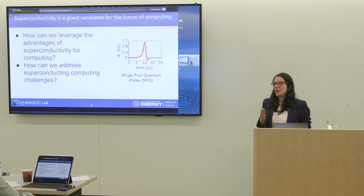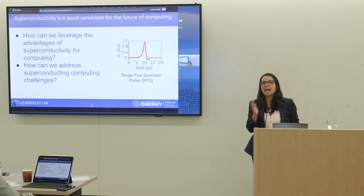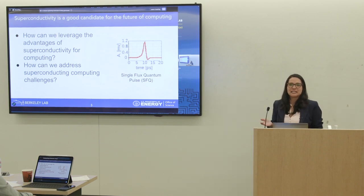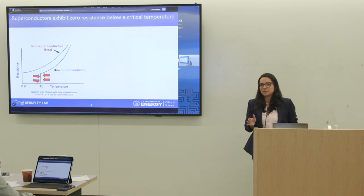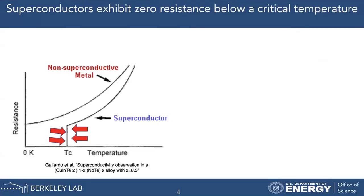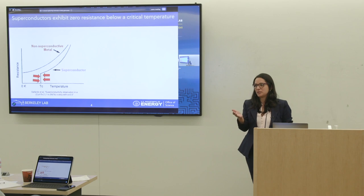The idea of this talk is that I want to tell you very quickly what are the advantages of superconductivity and how we can address the challenges of the technology. So here in the y-axis I'm showing you resistance, and on the x-axis I'm showing you temperature. You can see that if you lower the temperature enough below a critical temperature, the resistance of the metal is going to go to zero. That physical phenomenon is what we know as superconductivity.